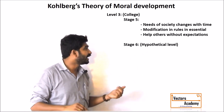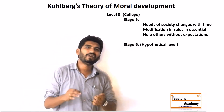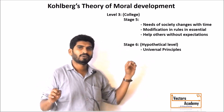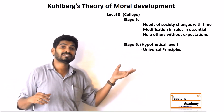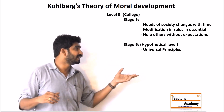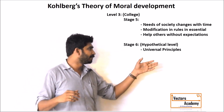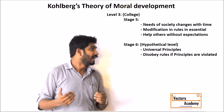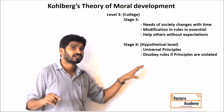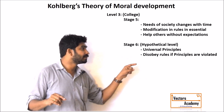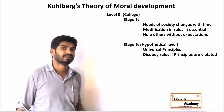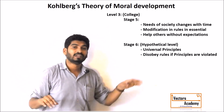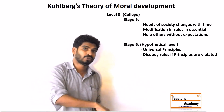Stage six is called the hypothetical level — very, very rare people reach here. What happens in this level is they actually develop universal principles such as equality, commitment to others, and justice. These universal principles are developed even further, and they are willing to disobey the rules if their principles are being violated. If certain rules violate the equality of people, they do not follow the rule and they persuade others not to follow the rule either.